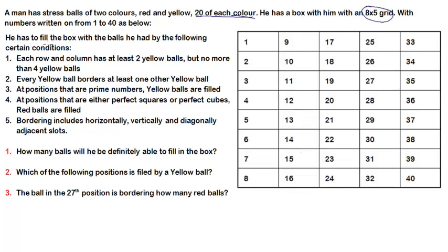He has to fill the box with the balls following certain conditions. He had 20 red balls and 20 yellow balls, so the total number of balls is 40 and he has to put one ball each in the boxes. The first condition says that each row and column has at least 2 yellow balls but not more than 4 yellow balls.